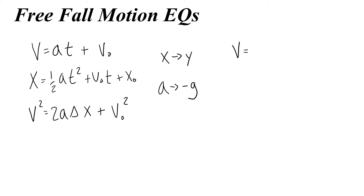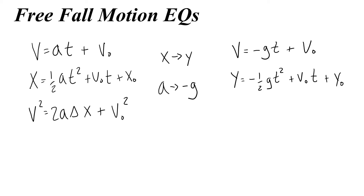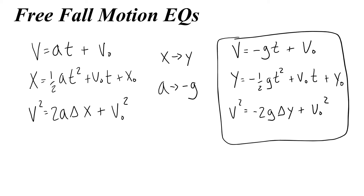Here's how this changes our equations. The first equation becomes v equals negative g times t plus v-naught. The second becomes y equals negative one-half g t-squared plus v-naught t plus y-naught. And the final velocity equation becomes v-squared equals negative 2g times delta-y plus v-naught squared. We now have a new set of motion equations where we've written y instead of x and negative g instead of a, which we can use for any object in free fall near Earth's surface with air resistance ignored.